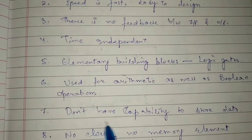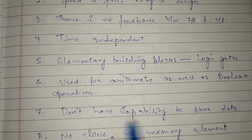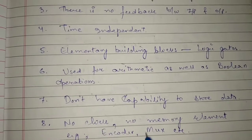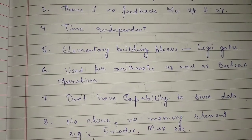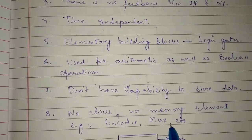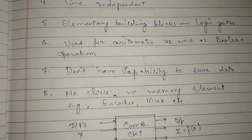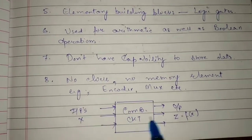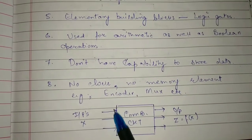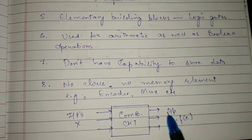Combinational circuits don't have the capability to store data — they do not have memory. No clock and no memory element is present. For example, encoders and multiplexers are examples of combinational circuits. This block diagram shows the combinational circuit with N inputs and Z outputs.